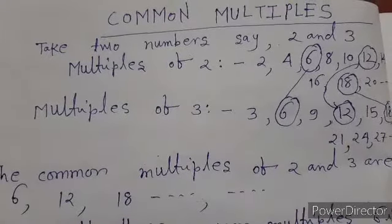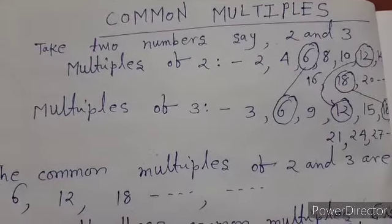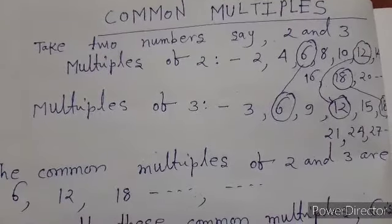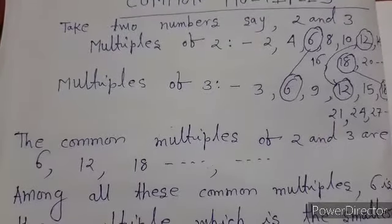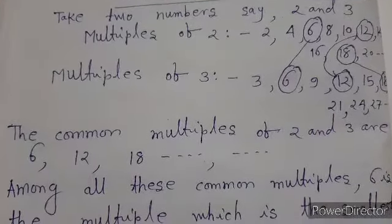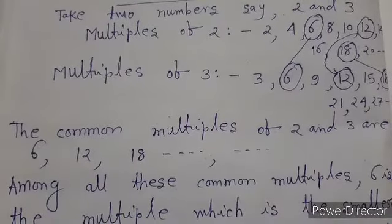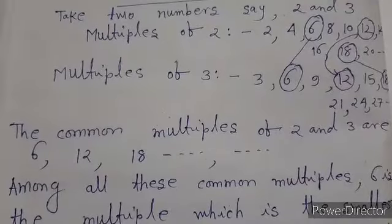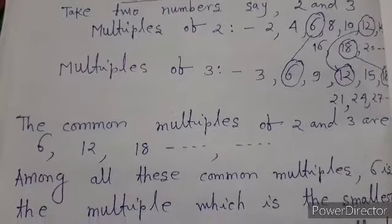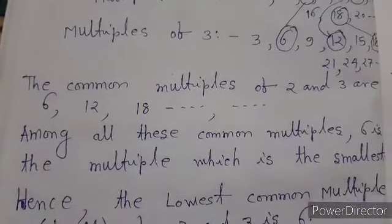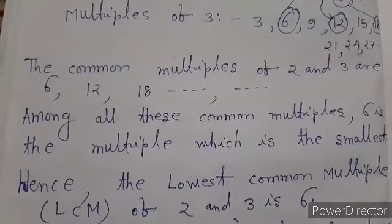Multiples of three are: three, six, nine, twelve, fifteen, eighteen, twenty-one, twenty-four, twenty-seven, and so on. The common multiples of two and three are six, twelve, eighteen. Among all these common multiples, six is the smallest. Hence, the lowest common multiple, that means LCM of two and three, is six.